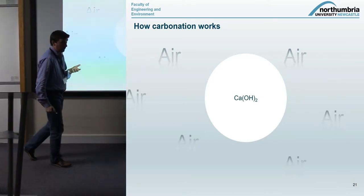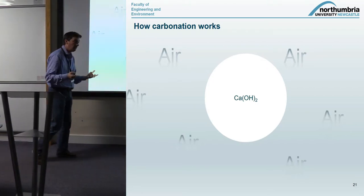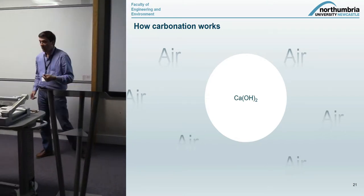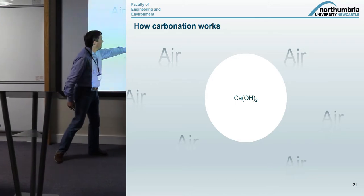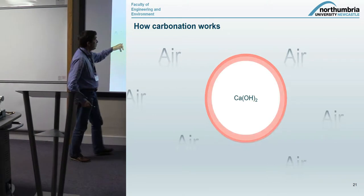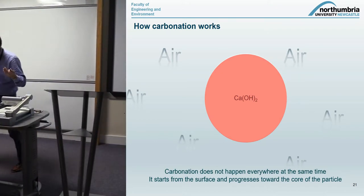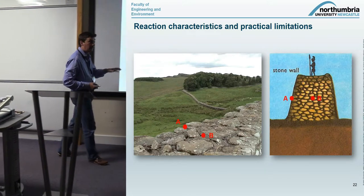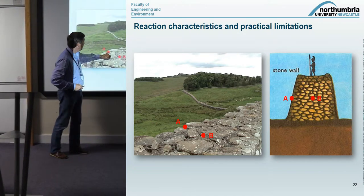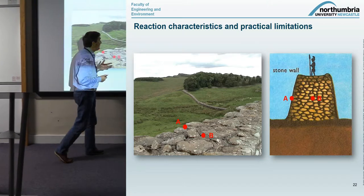Why might the sampling work be wrong? Because carbonation, unlike hydration in cement — which happens everywhere at the same time — is a surface reaction. It starts from the surface: if we imagine a particle of calcium hydroxide in contact with air, carbonation starts where air meets the calcium hydroxide and moves toward the center. This means the center carbonates later compared to the surface. In a wall several centimeters thick, this could be a significant problem.